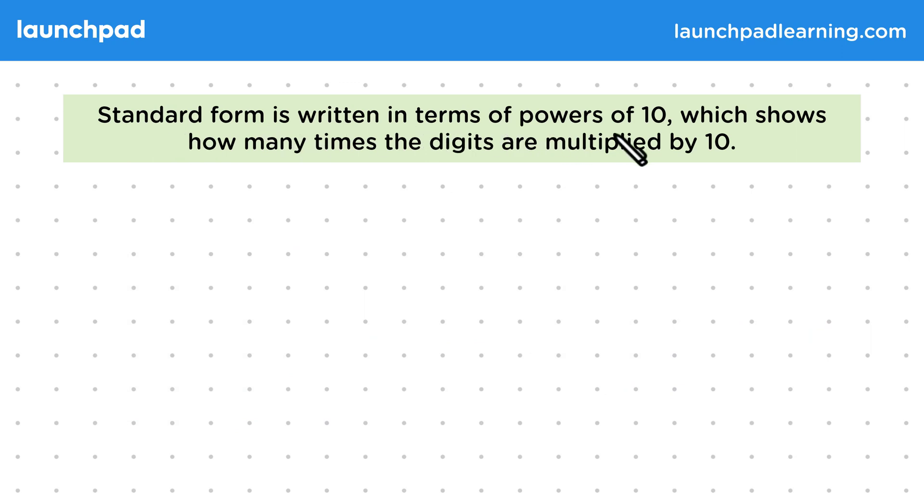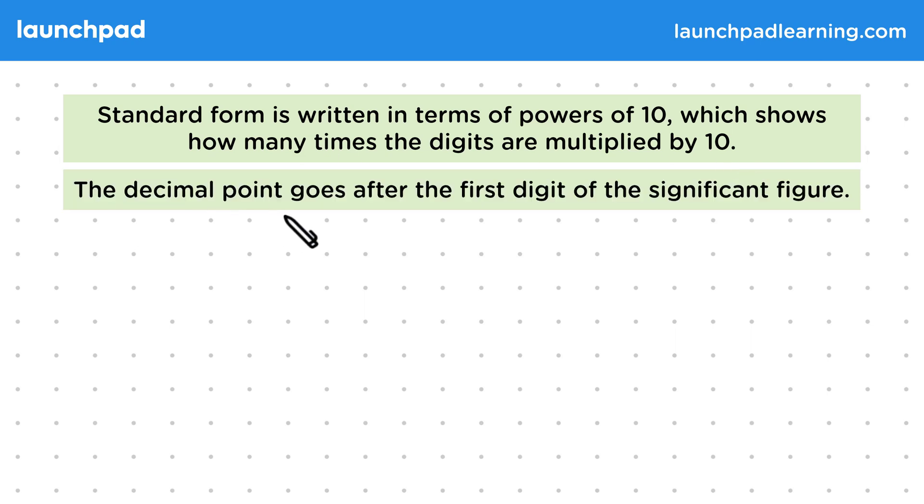Standard form is written in terms of powers of 10, which shows how many times the digits are multiplied by 10. The decimal point goes after the first digit of the significant figure.